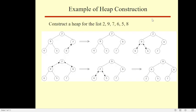Example of heap construction: the given list is 2, 9, 7, 6, 5, and 8. These elements are arranged as a binary tree in top-down, left-to-right order: 2 at the root, then 9 and 7 in the next level, and 6, 5, 8 in the third level. According to bottom-up heap construction, the last parental node 7 is checked. Its child has key value 8, which is greater than 7, so 7 and 8 are swapped. Now 8 is in the parent position and 7 is the child.